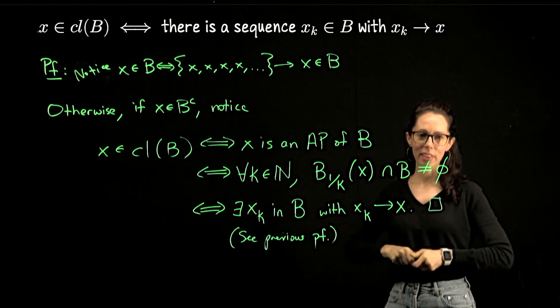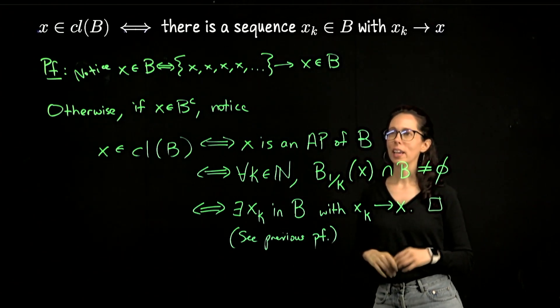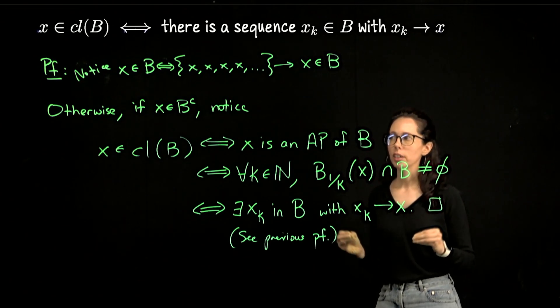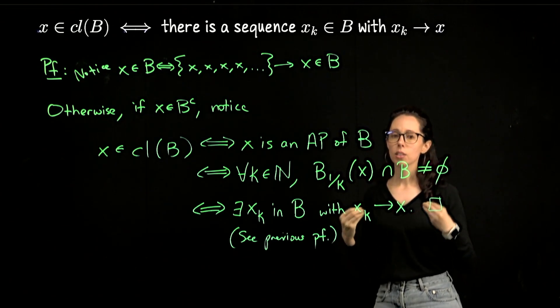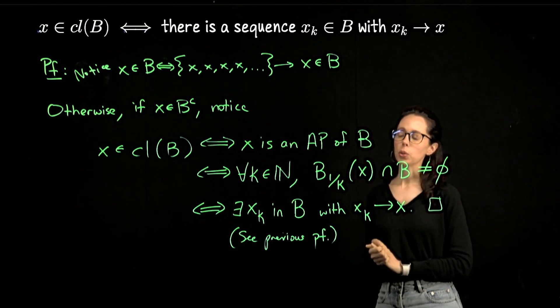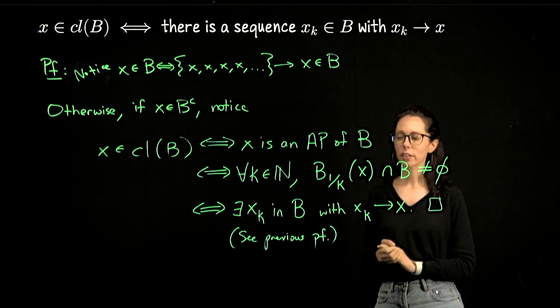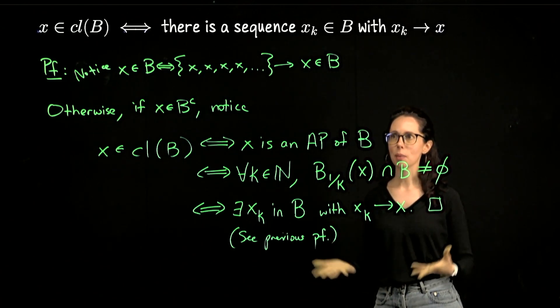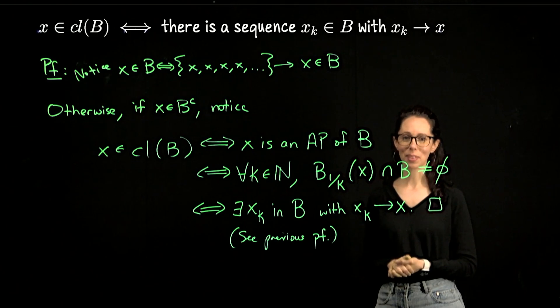So that will wrap up this lecture where, again, I just wanted to focus entirely in this discussion on the relationship between sequences, sequential limits, accumulation points, and closed sets. These will be tools that we will use, particularly in the study of, say, compact sets. We will need some of these statements here. Thank you for your attention.